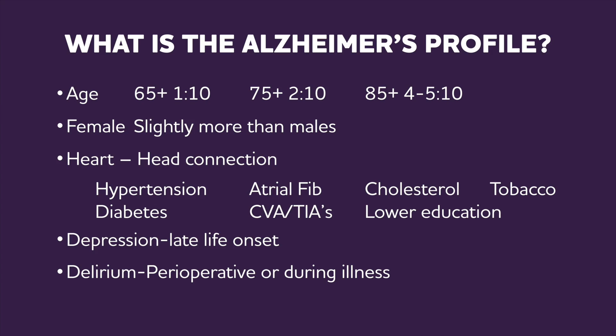What is the Alzheimer's profile? First, we look at age — as we age, we move into higher risk. Next, females are more susceptible than males to Alzheimer's disease. Then we look at the heart-head connection, including hypertension, diabetes, atrial fibrillation, CVA, TIAs, cholesterol, lower education, and tobacco use.